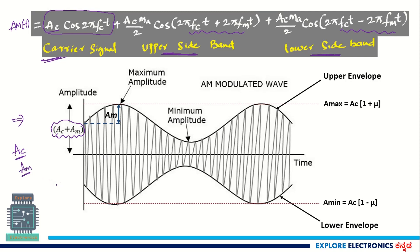That is why in the previous video, I said it can be compared to a dad carrying his son on the shoulder. The son will be the modulating signal with amplitude AM, and dad's amplitude will be AC. So, AC plus AM will be the total amplitude we are going to get after modulation.